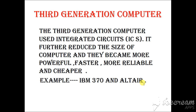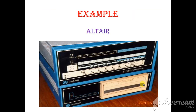In the third generation computer, integrated circuits (ICs) further reduced the size of the computer. They became more powerful, faster, more reliable, and cheaper. Examples are the IBM 370 and Altair.